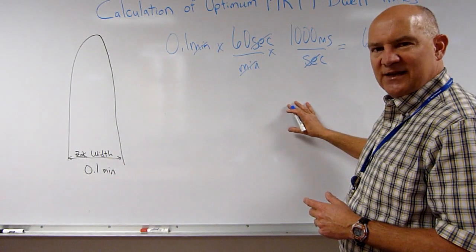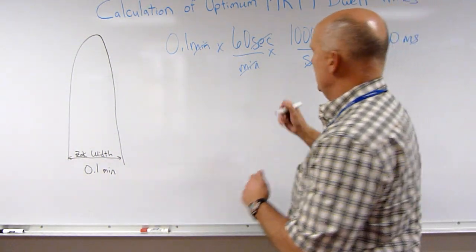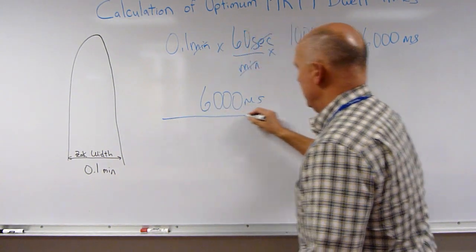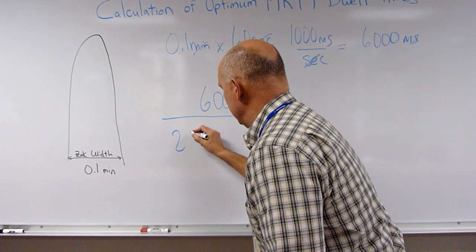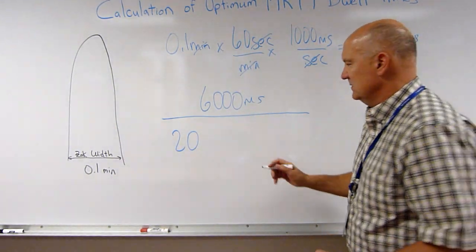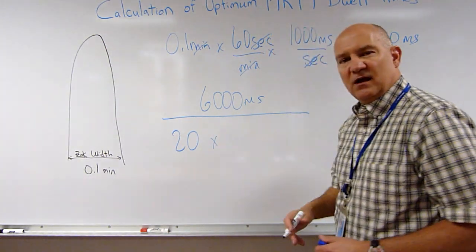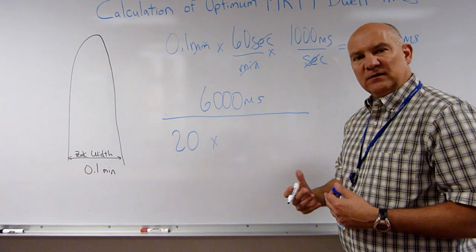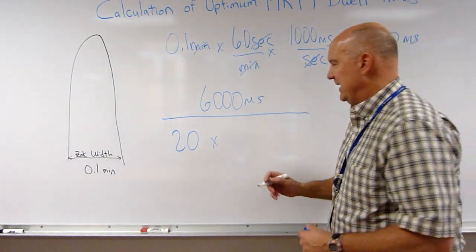So, if we take our 6000 milliseconds and we divide this by 20 data points. And again, 20 data points of what? 20 data points of each compound. And for this example, let's pretend that we have 6 compounds to quantitate.